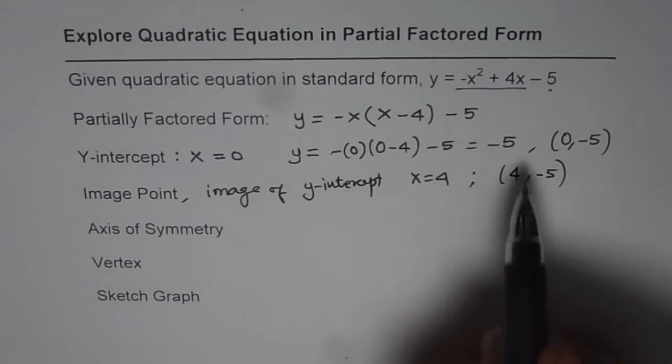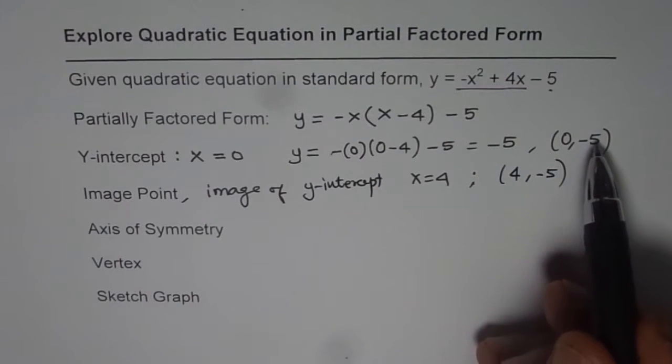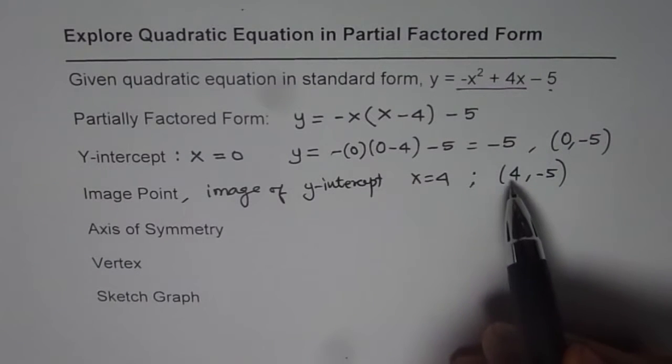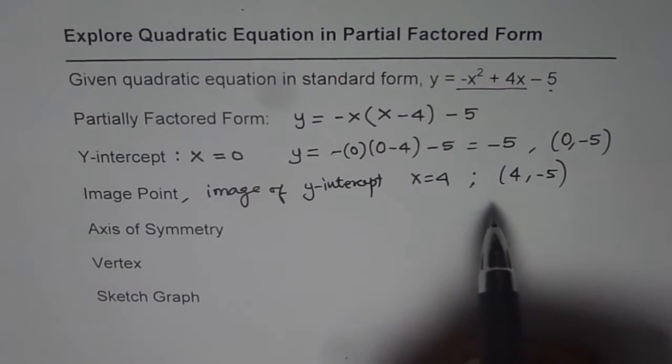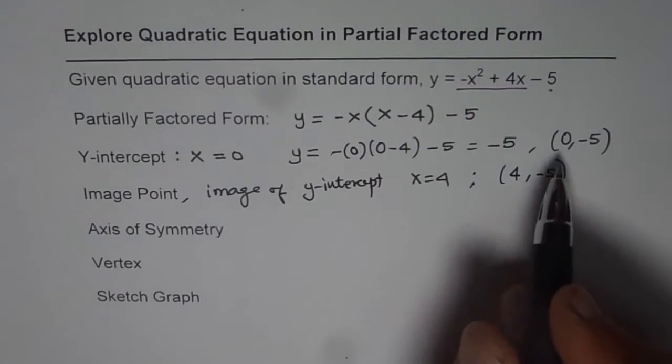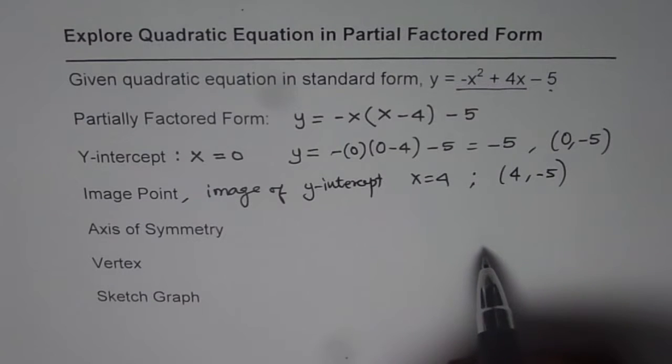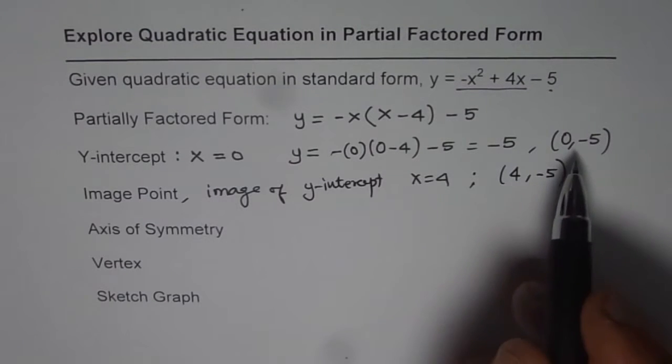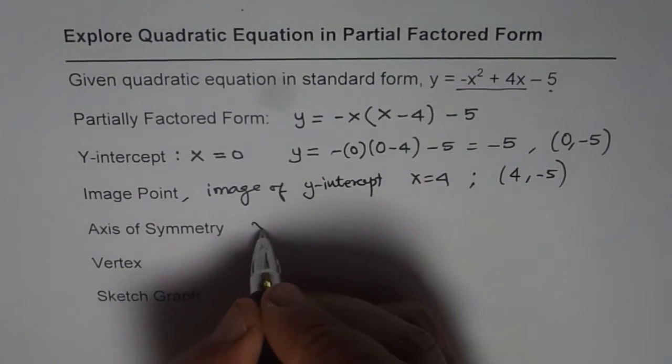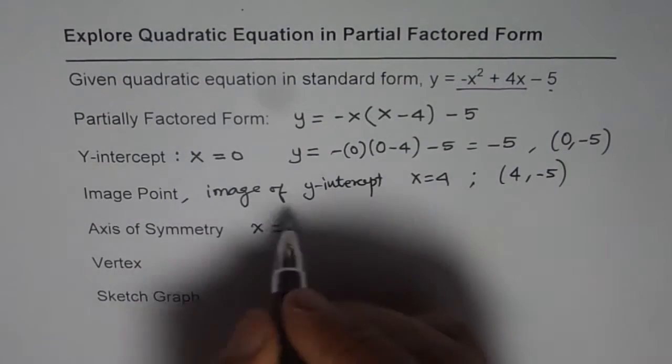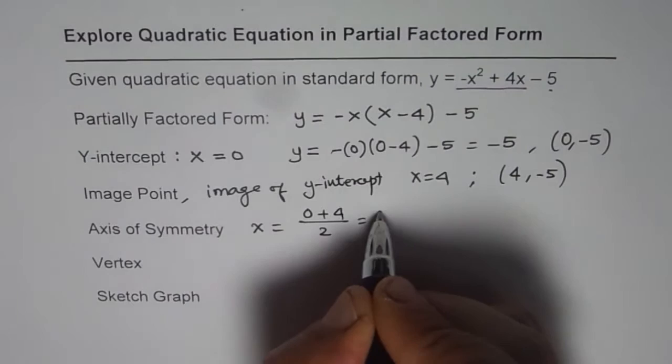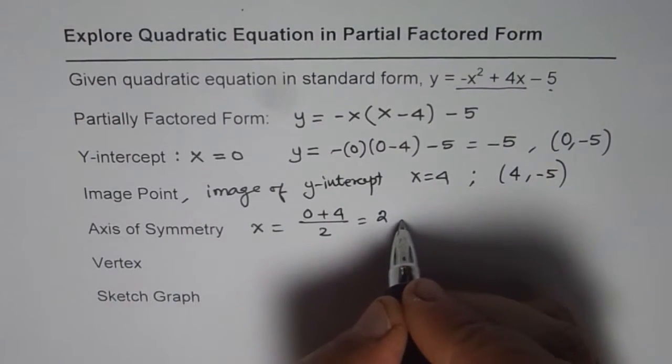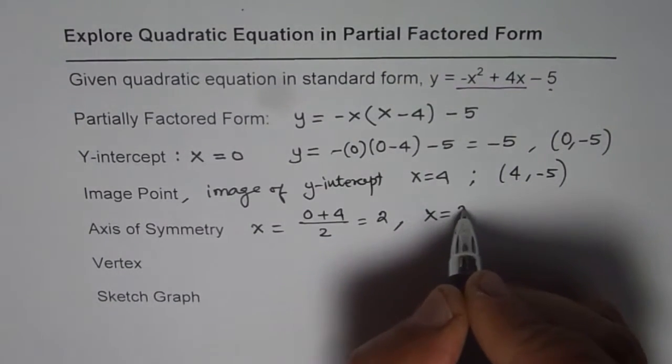Now, axis of symmetry is a line which divides the line segment 0 minus 5 and 4 minus 5 perpendicularly, equally, bisects this segment. So divides the line segment into equal halves. That should be at the x value of 0 plus 4 divided by 2, which is 2. So axis of symmetry is x equals 2.